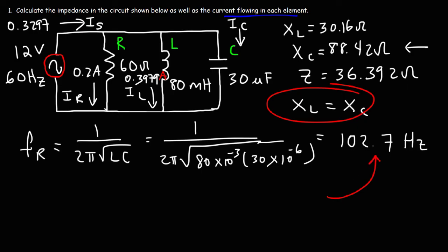That's it for this video. Now you know how to calculate the impedance and the current flowing through each branch, as well as the resonant frequency of the inductor and capacitor in this circuit.